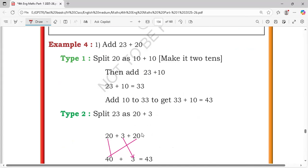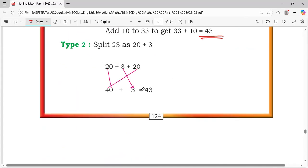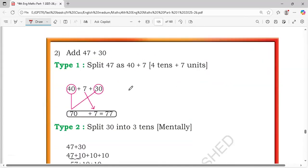Next, add 23 plus 20. First add 20 plus 20, that means 40 plus 3, 43. Split like this. This is easy.